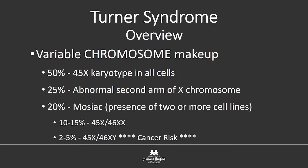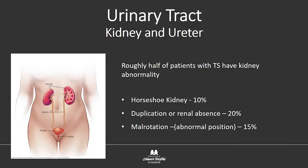There is a variety of chromosome makeups. 50% of people with Turner syndrome have the pure 45X karyotype in all their cells. About 25% have an abnormal second arm of the X chromosome. 20% are mosaic — 10 to 15% are the 45X/46XX variety, and 2 to 5% are the 45X/46XY variety. That 45X/46XY karyotypic mosaicism is the one most at risk, and that's really what we're here to talk about.